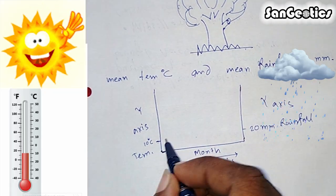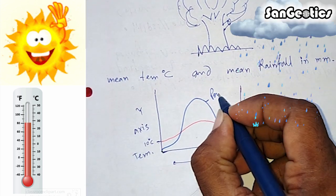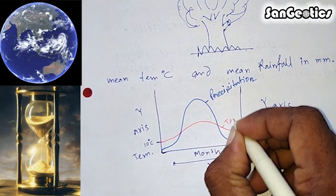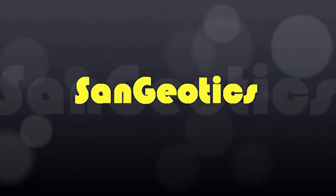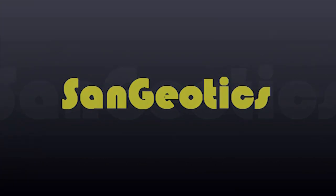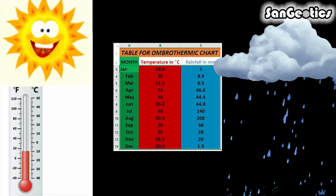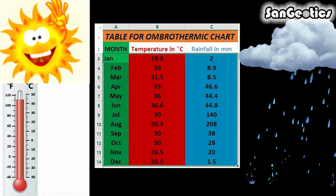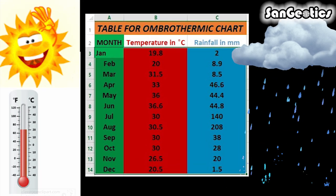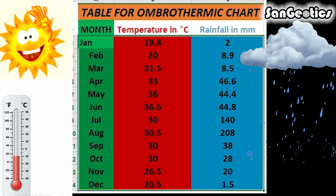The temperature and precipitation data are plotted against an x-axis of time. This is the average temperature and precipitation data of at least 30 years. On the basis of this mean temperature and precipitation data, we draw the ombrothermic chart.